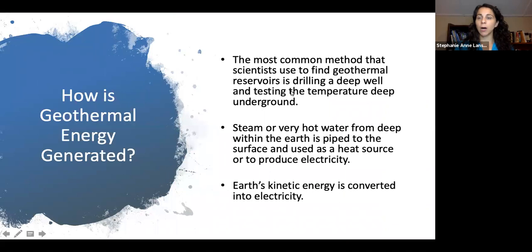The most common method that scientists use to find geothermal reservoirs is to drill a deep well and test the temperature underground. Steam or very hot water from deep within the earth is piped to the surface and can be used as a heat source or to produce electricity. The kinetic energy from the movement of molten material in the earth is converted into electricity or heat.